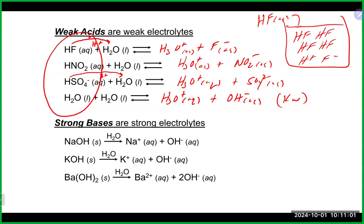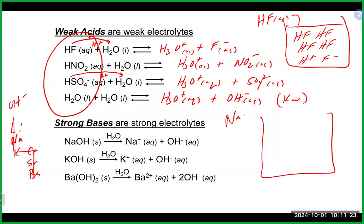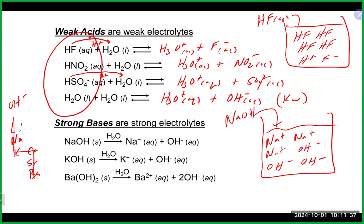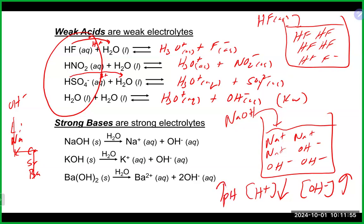Strong bases are also strong electrolytes. Looking at group 1 and group 2 on the periodic table — the alkaline metals and alkaline earth metals — hooking these up with hydroxide gives you strong bases. If you dump sodium hydroxide in solution, it will produce a bunch of free OH- ions, making that solution basic. The presence of all that OH- brings down the H+ concentration, which raises the pH.